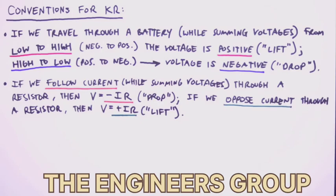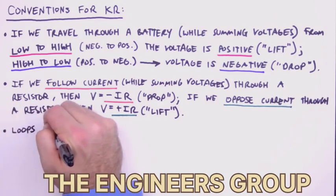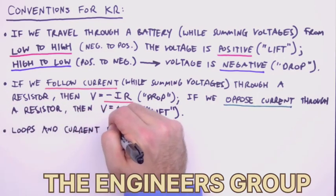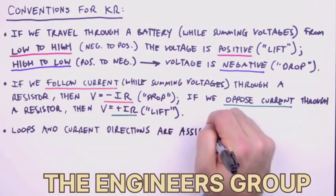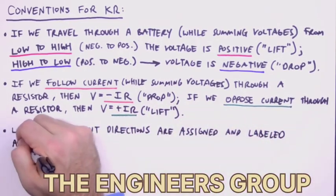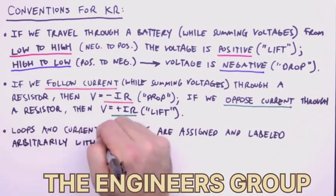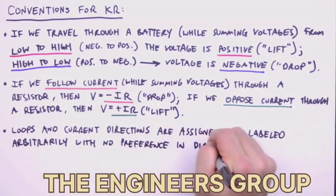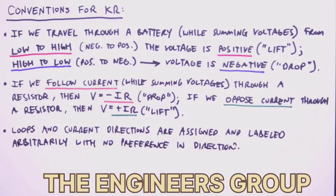Now a lot has been said about the directions of currents and loops. How are these directions initially decided? This is the best part. The directions of loops and currents are assigned and labeled arbitrarily, with absolutely no preference in direction. So long as the circuit is correctly analyzed using Kirchhoff's rules, the actual direction of positive charge flow will be revealed in our results. So it's kind of like choose your own adventure in physics land.